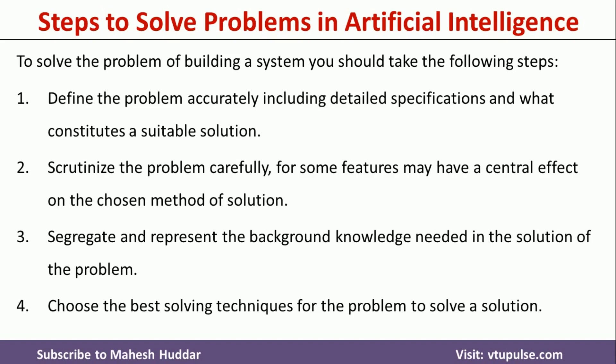The last step is to choose the best solving technique so that we can solve the problem efficiently. In Artificial Intelligence, we have different techniques like informed search and uninformed search. Within uninformed search, we have techniques like DFS and BFS. When it comes to informed search problems, we need to use algorithms like A* algorithm, AO* algorithm, hill climbing, or problem reduction. Based on the requirement, we need to choose one solving technique which will efficiently solve the given problem. These are the different steps we need to follow to solve any problem in Artificial Intelligence.